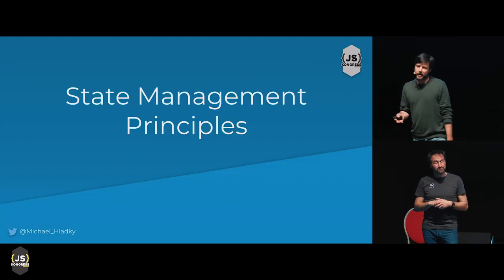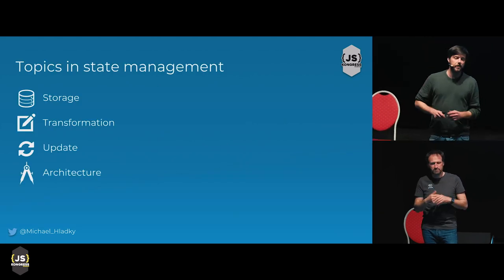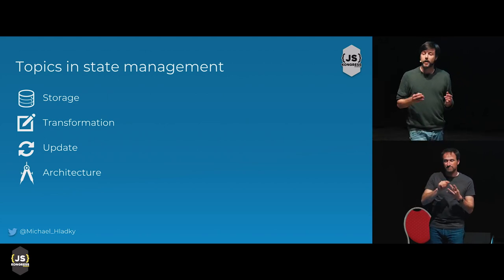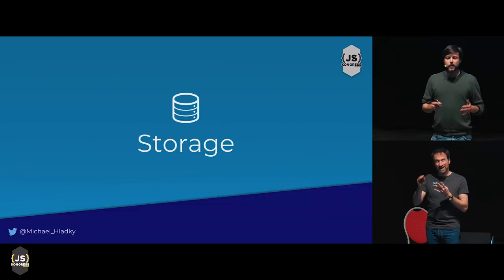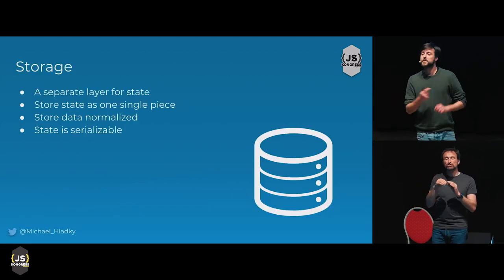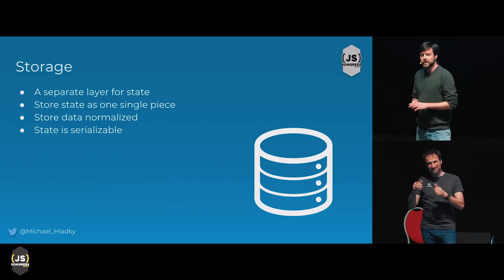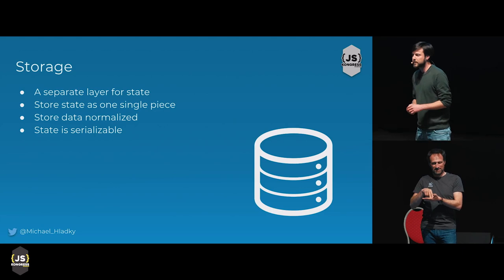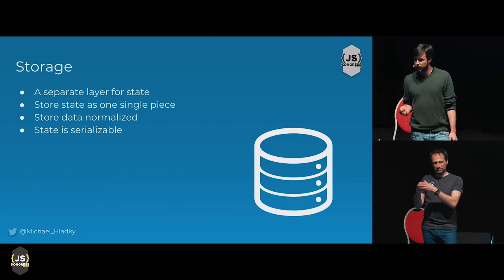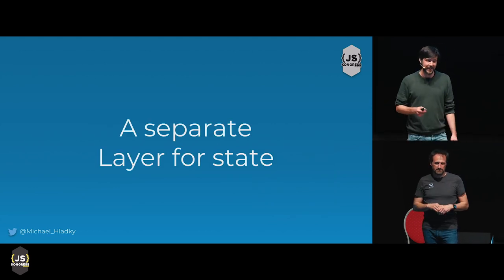Let's start with state management principles. I came up with four different categories: storage, transformation, updates, and architecture. Let's start with state storage. Here I have four different principles: a separate layer for state, store state as one single piece, store data normalized, and state is serializable. Let me start with the first principle — a separate layer for state.